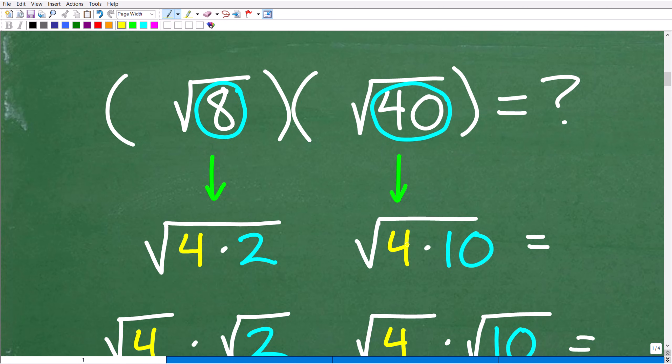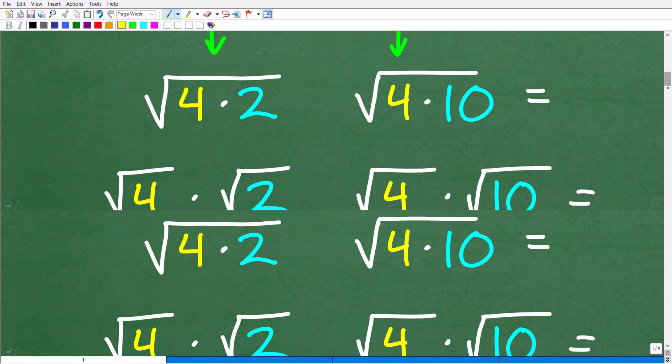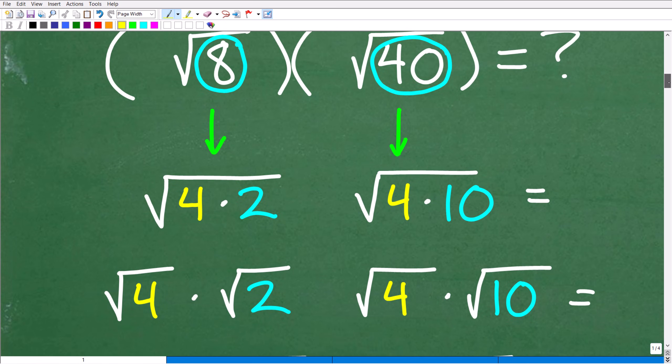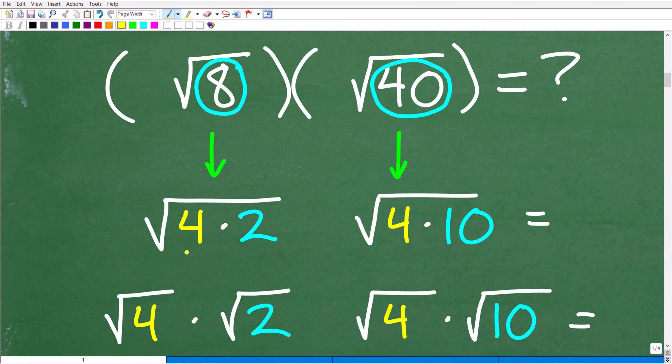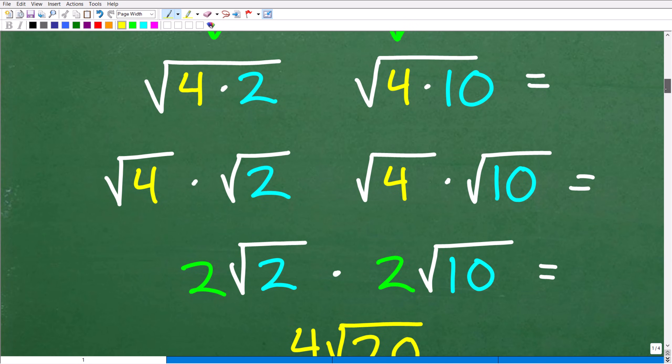Now, what you want to do is use the biggest perfect square factor when you recognize it. Now, if you can't remember or if you just don't recognize the bigger perfect square factor that is a factor of that number, don't worry about it. Just start simplifying little by little. But you'll see here in a second what I'm talking about. All right, so here we have the square root of 8. That's equal to the square root of 4 times 2. And the square root of 40 is equal to the square root of 4 times 10.